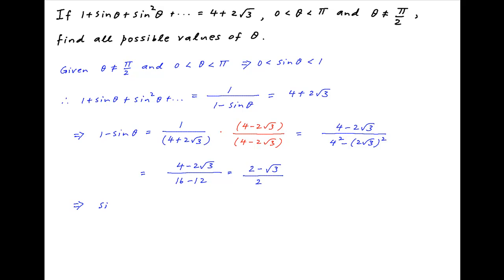Solving this for sin θ, we get sin θ is equal to 1 - (2 - √3)/2, which is equal to (2 - 2 + √3)/2. The 2 cancels in the numerator and we are left with sin θ = √3/2.